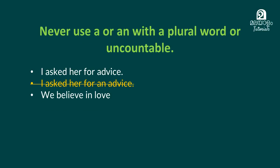Never use 'a' or 'an' with a plural word or uncountable noun. If you say uncountable nouns, we don't have to use 'a' or 'an'. For example, 'I asked her for advice' — we do not say 'for an advice'. We believe in love — we do not say 'a love'.